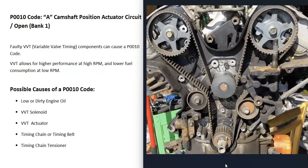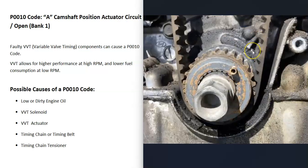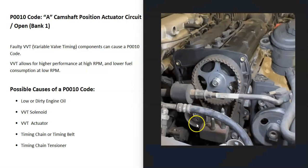Another cause can be a bad timing chain or timing belt. There are timing marks that all need to line up, and if they don't, the belt or chain has slipped a notch and is throwing everything off. A more common cause is a chain tensioner not holding the chain or belt in place properly — it becomes loose, and even if the marks line up, when the engine is running it throws off the timing. A very old timing chain or belt can also stretch and cause a P0010 code.